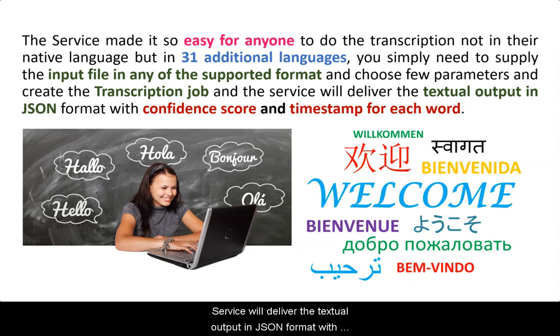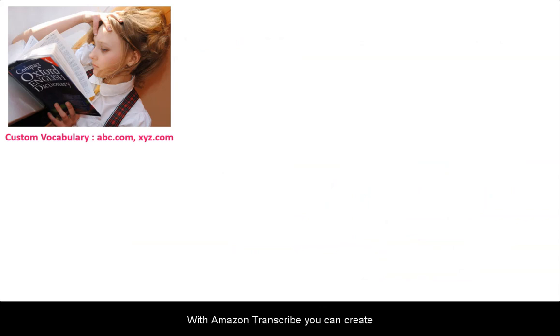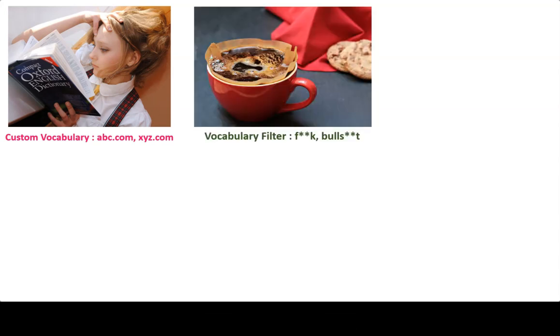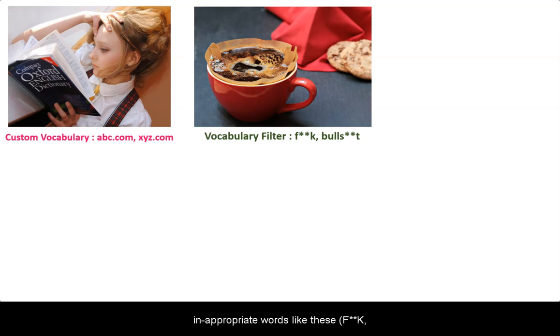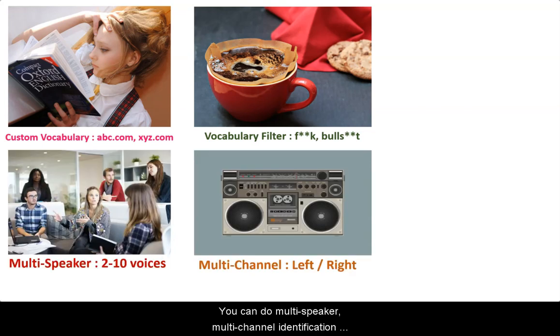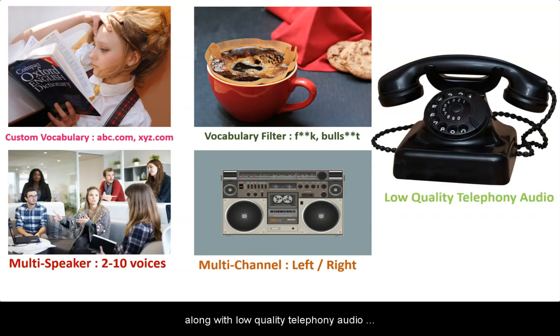The service will deliver the textual output in JSON format with confidence score and timestamp for each word. With Amazon Transcribe, you can create custom vocabulary for industry-specific terms that you want to auto transcribe correctly. You can create a vocabulary filter to mask or remove inappropriate words automatically from the transcription output. You can do multi-speaker, multi-channel identification along with low quality telephony audio transcriptions.